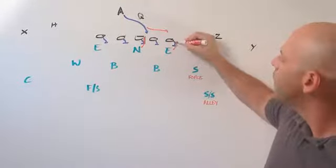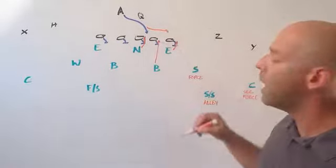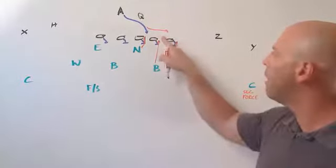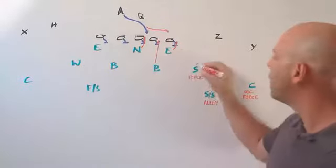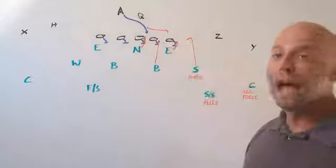The defensive end is going to be fitting inside half of his gap to the outside. Our linebacker is going to be responsible for fitting the inside half of his gap, B gap, defensive end, C gap, and then our forced player coming down to force the play and turn it back inside.